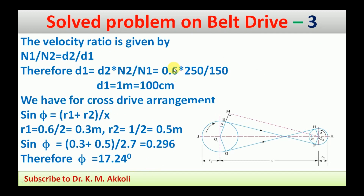Both the driving and driven pulley speeds n1 and n2 are given, but only the diameter of the driven pulley is given. The driving pulley diameter d1 must be found using the velocity ratio: n1/n2 = d2/d1, therefore d1 = d2 × n2/n1 = 0.6 × 250/150 = 1 metre (100 cm).